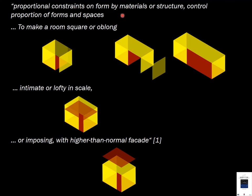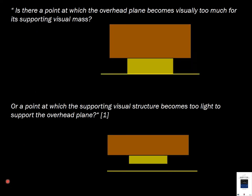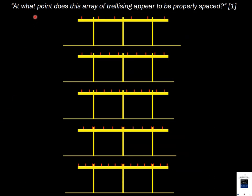Proportional constraints on form — imposed by materials or structure — control the proportion of forms and spaces, making a room square or oblong, intimate or lofty in scale, or imposing with a higher than normal facade. There is a question of balance: at what point does the overhead plane become visually too much for its supporting visual mass, or the supporting structure appear too light to hold the overhead plane? Similarly, at what point does an array of trellising appear properly spaced?